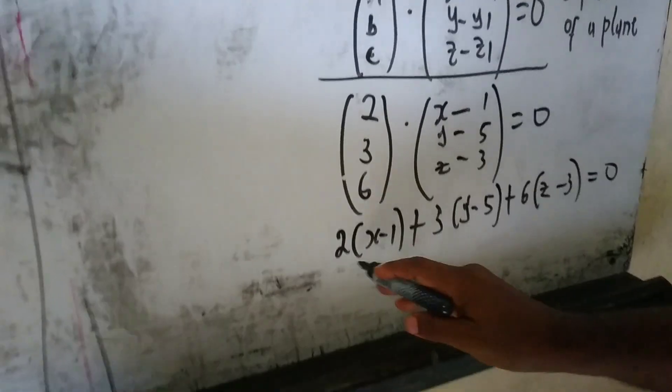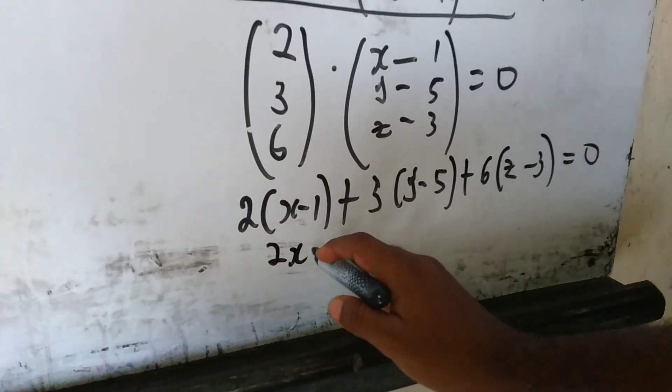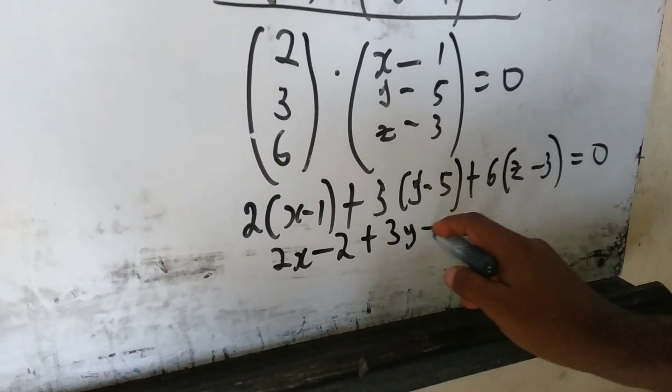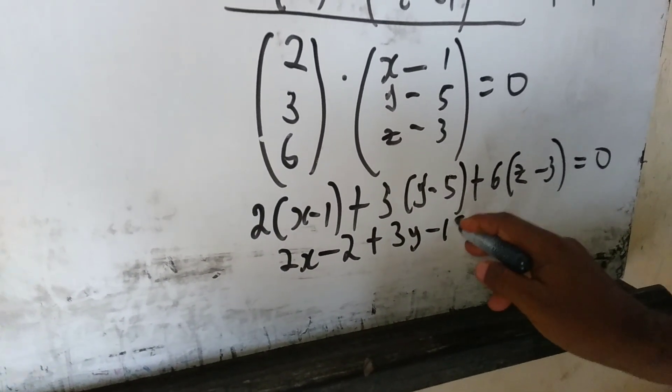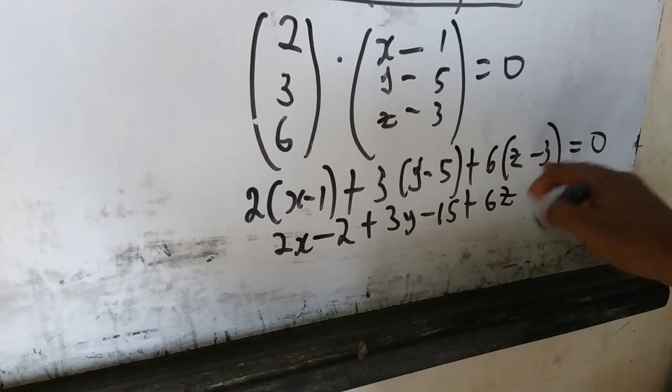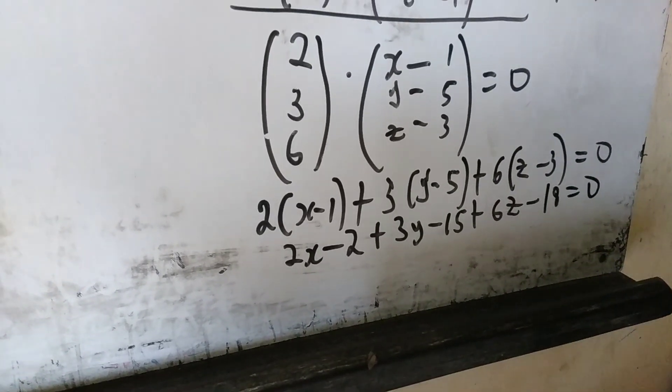When I open this bracket, I'm going to have 2 times X. That will be 2X minus 2 times 1. That is 2. Plus 3 times Y. 3Y minus 3 times 5. That is 15. Plus 6 times Z. That is 6Z. Plus times minus. That is minus. 6 times 3. That is 18. Is equal to 0.